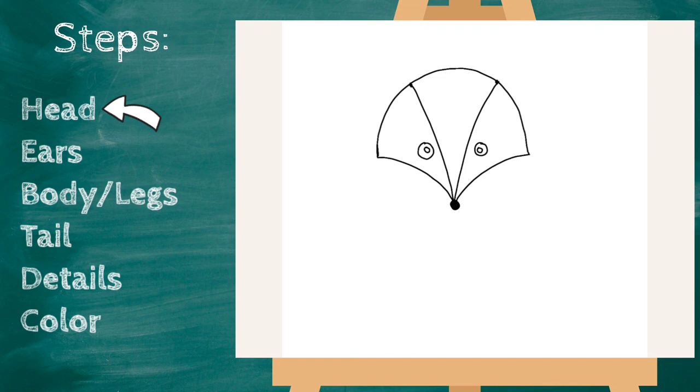Our next step is his ears. And I'm gonna start my fox's ears right about where this line is, and his ears are gonna curve up and down. And then I'm gonna make that same shape on the inside to curve up and down.